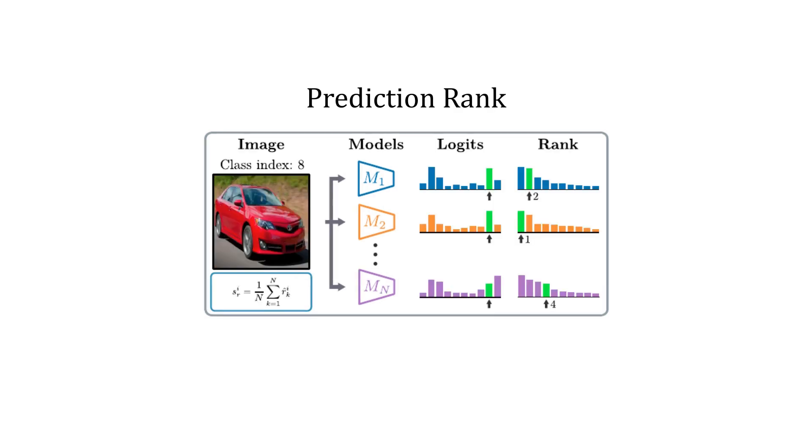Our second proposed metric we call prediction rank. It measures the average rank of an image in the predicted class distribution.